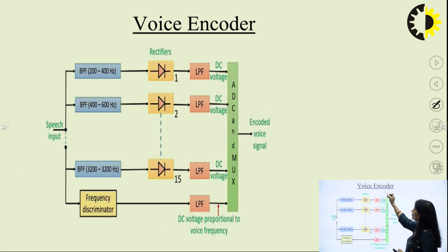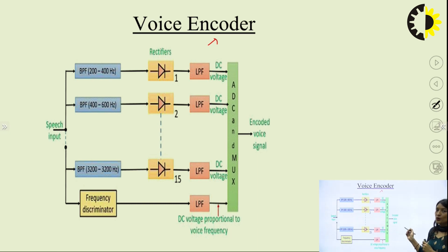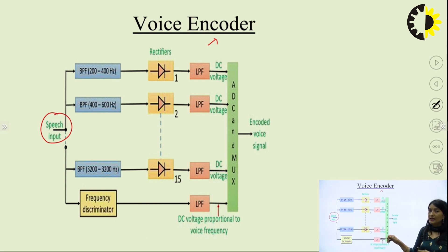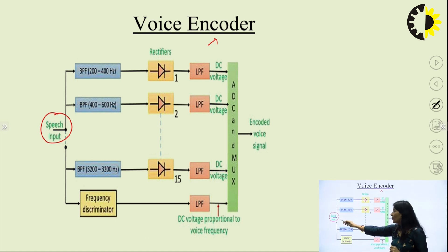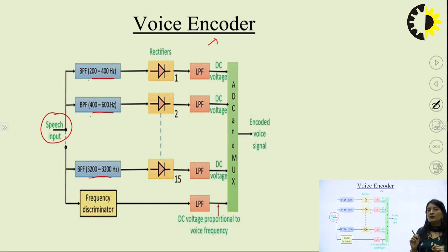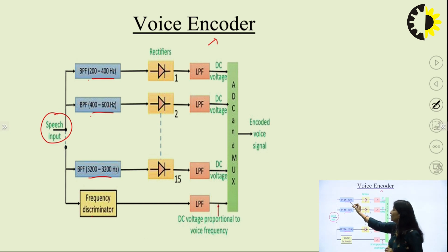This is the voice encoder at the transmitting end. This is a very important block diagram of the voice encoder and decoder. The speech input is provided to a number of band pass filters ranging from 200 to 400 Hz, then 400 to 600 Hz, up to 3200 Hz. Our speech signal ranges from 20 Hz to 32 kHz, so here we have separated a number of band pass filters with a bandwidth of 200 Hz, ranging from 200 Hz to 3200 Hz.